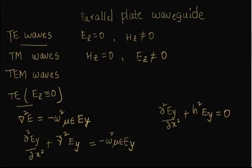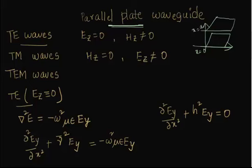After reminding of the relations derived in the previous lecture, I am going to carry on with parallel plate waveguide. Parallel plate waveguide is where, considering this as the axis, you have a plate here and a plate here. This is a figure of parallel plate waveguide where you have two parallel plates at x equal to 0 and x equal to a.